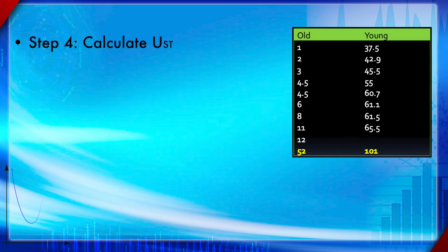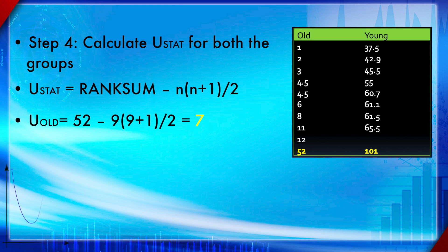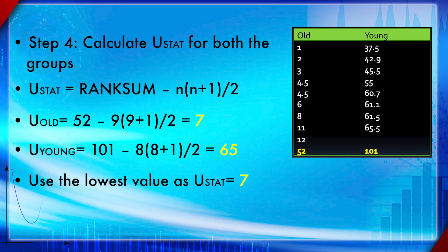Step four is to calculate the U statistic for both groups separately. The equation is: U = rank sum − n(n+1)/2, where n is the group sample size. For the old rat group, the rank sum was 52 and n = 9, so U = 52 − 9×10/2 = 7. For the young rats, U = 65. The lowest of the two U values is taken as the U statistic — comparing 7 versus 65, the U statistic is 7.